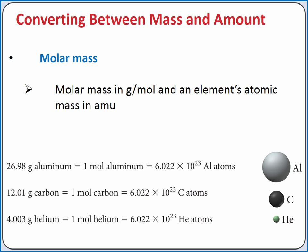So, from the periodic table, aluminum has an atomic mass of 26.98 atomic mass units. This also means that 26.98 grams of aluminum is equal to one mole of aluminum atoms, or 6.022 times 10 to the 23rd power of aluminum atoms.